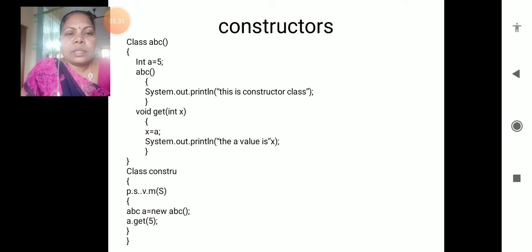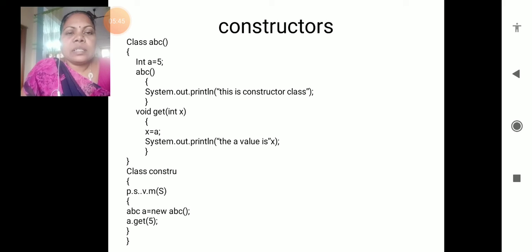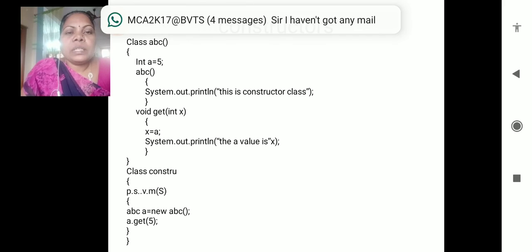In this constructor, the types of constructors are: default constructor, parameterized constructor, and copy constructor. These are the types of constructor. In this example, ABC - System.out.print - and this is the constructor class.